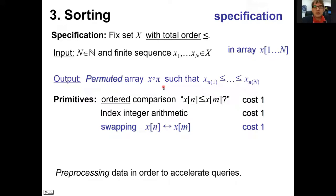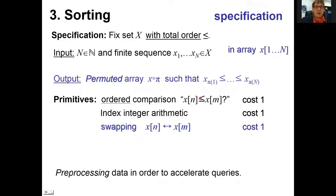There's a correspondence to discrete mathematics: every permutation can be represented as a composition of swapping operations, called transpositions. In a sense, the goal is to find a transposition decomposition of a permutation that makes the input array sorted. We call it swapping in algorithms; in mathematics it's called a transposition.